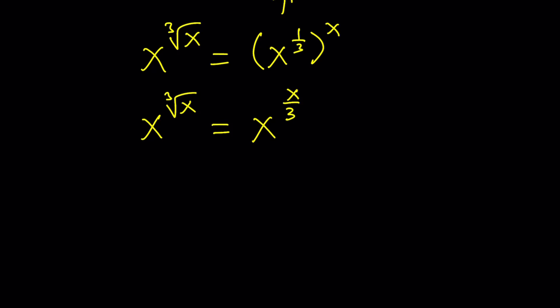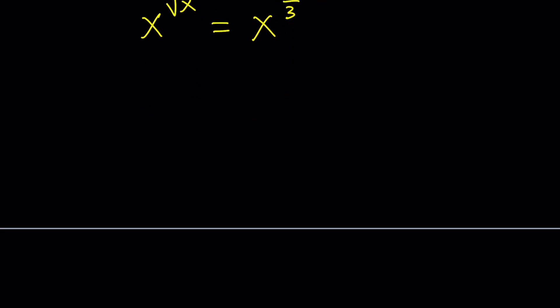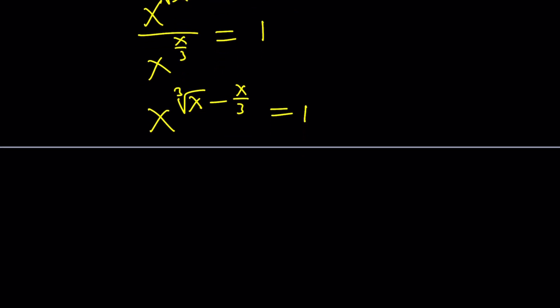You can also put everything on the same side. Divide by x to the power x over three. That gives you one. And then by way of subtraction, you get x to the power cube root of x minus x over three equals one. And then you can look at different scenarios.